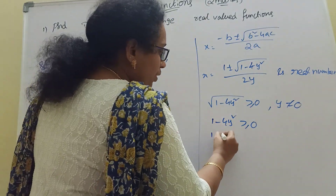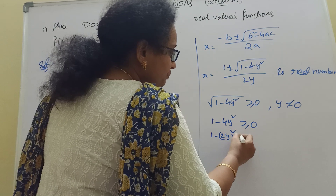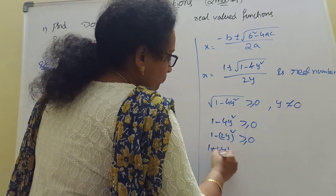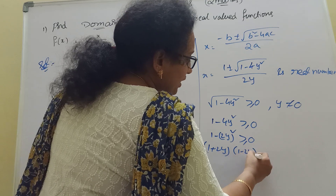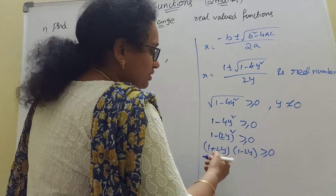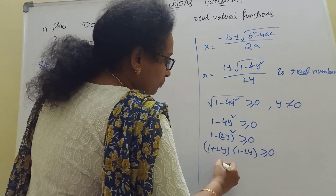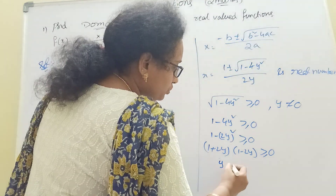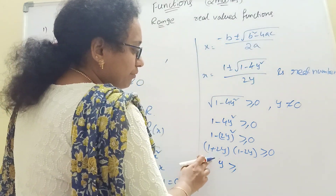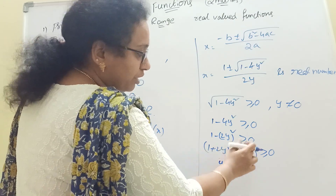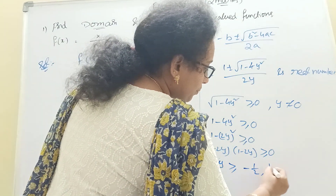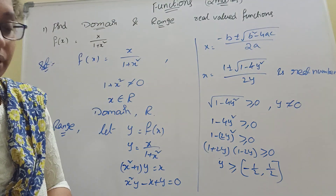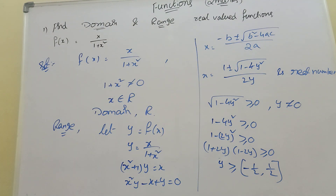1 minus 2y whole square. A square: 1 minus 2y, 1 minus 2y, and equal to 0. Again, minus 1 by 2, 1 by 2. Close bracket. Okay? That is range: minus 1 by 2, 1 by 2. Okay?